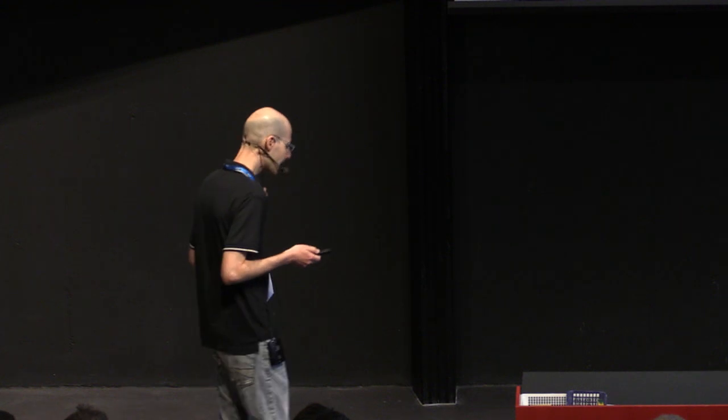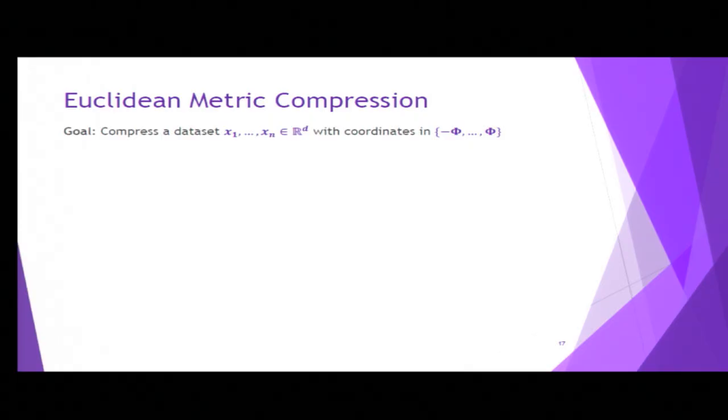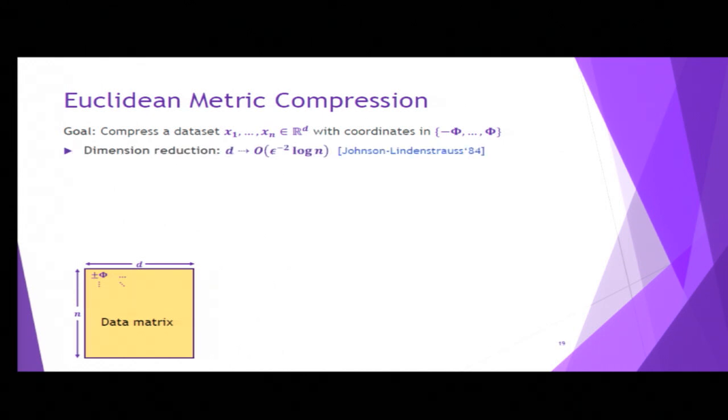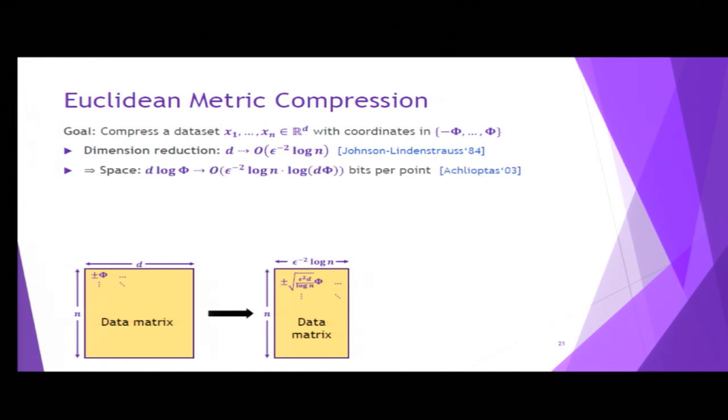We have n points in d dimensions. We also need a parameter for the numerical range of values. Let's say that the coordinates are represented by log Φ bits, so we can visualize the data set as a matrix. The first line of attack would be dimension reduction. A very famous theorem, due to Johnson and Lindenstrauss, tells us that we can reduce the dimension from whatever it was to only log n, something like log n, and approximately preserve all the distances, and in particular the nearest neighbors. In terms of compression, it simply means that instead of storing d numbers per point, you only store something like log n numbers, and this is already some bound on compression. The question is, is it optimal or can we do better?